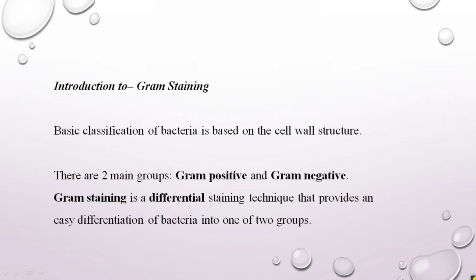We will see some introduction about gram staining. The basic classification of bacteria is based on the cell wall structure, and based on the cell wall structure the bacteria have been classified into gram positive and gram negative. Gram staining is a differential staining technique that provides an easy differentiation between gram positive and gram negative bacteria based on the structure of the cell wall.